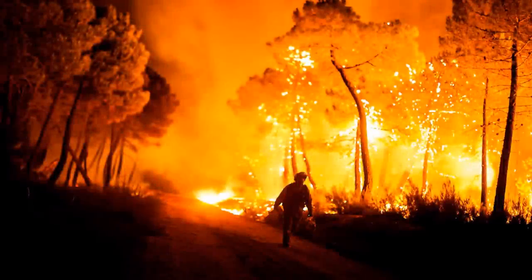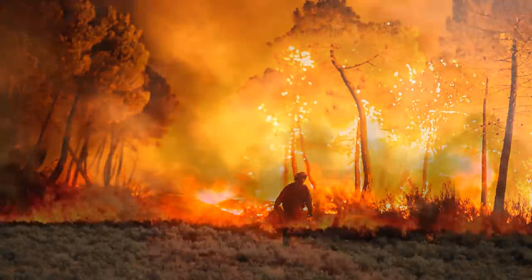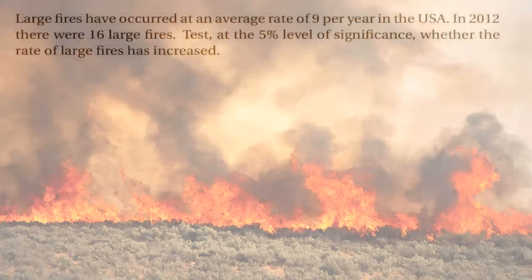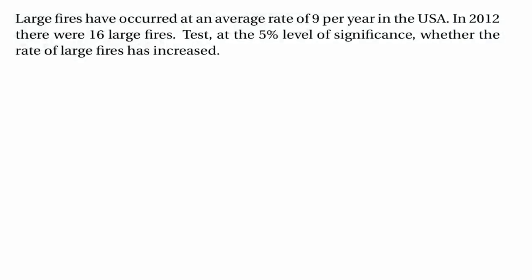Let's look at the first example, which is to do with large fires in the US — in particular, large fires that burn over a hundred thousand hectares of land. Large fires in the US have occurred at the rate of about nine per year over the last decade or so, but in 2012 there were 16 large fires. So let's test at the five percent level of significance whether the rate of large fires has increased.